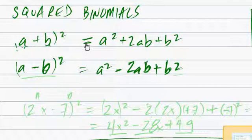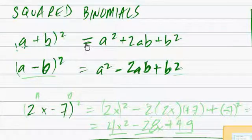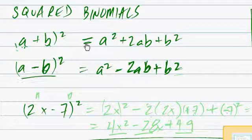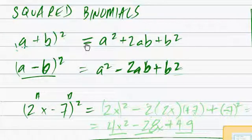So let's take a look at the sample problem, and we'll try (2x-7)². So we're going to use this one here. What we need to do is identify a and b, in this case a, in this case b.